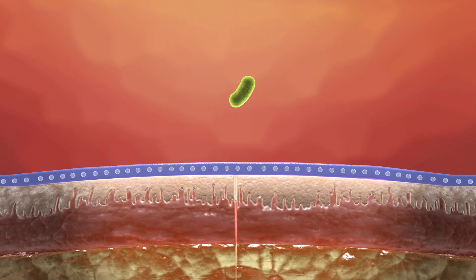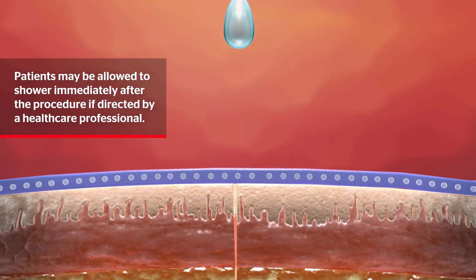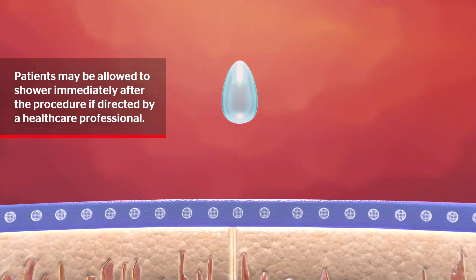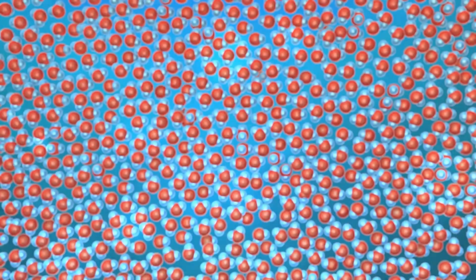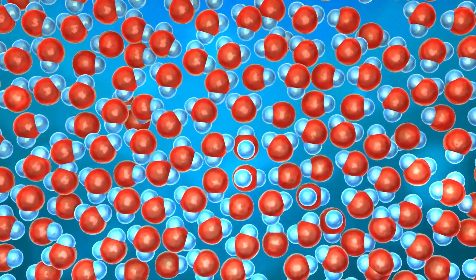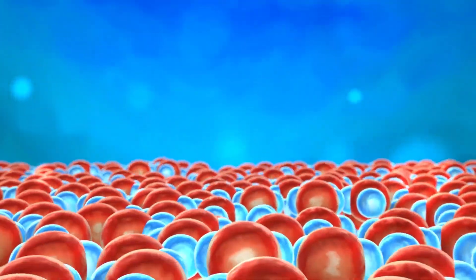Bacteria cannot penetrate the film simply because they are too large. Water is repelled for the same reason. Liquid water is a collection of bonded water molecules that is bigger than its individual parts.